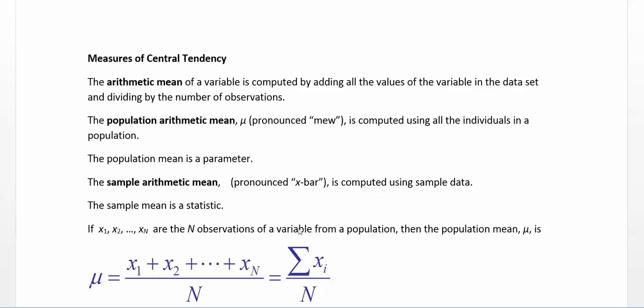It's a nice formula down here. We have something called a population arithmetic mean. The symbol is mu. It's a Greek letter.